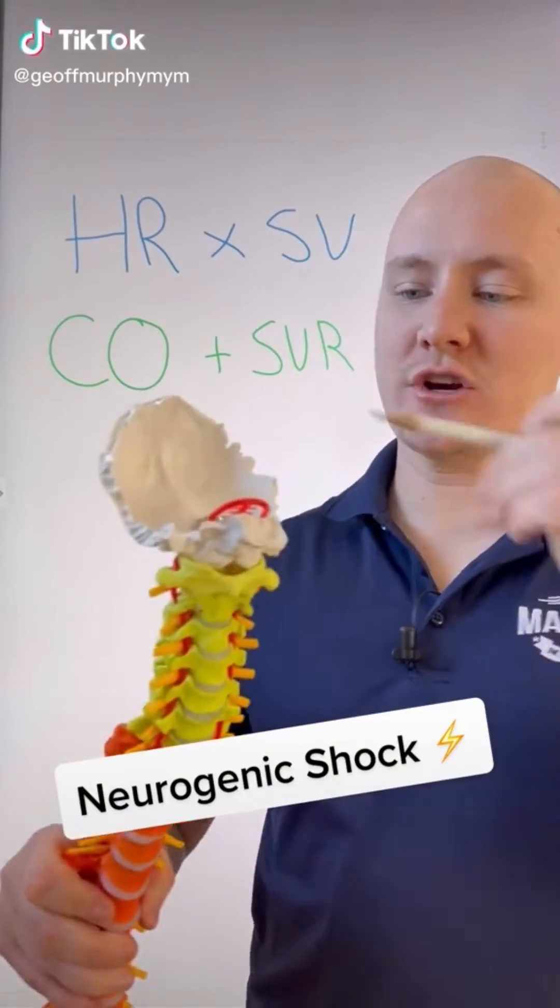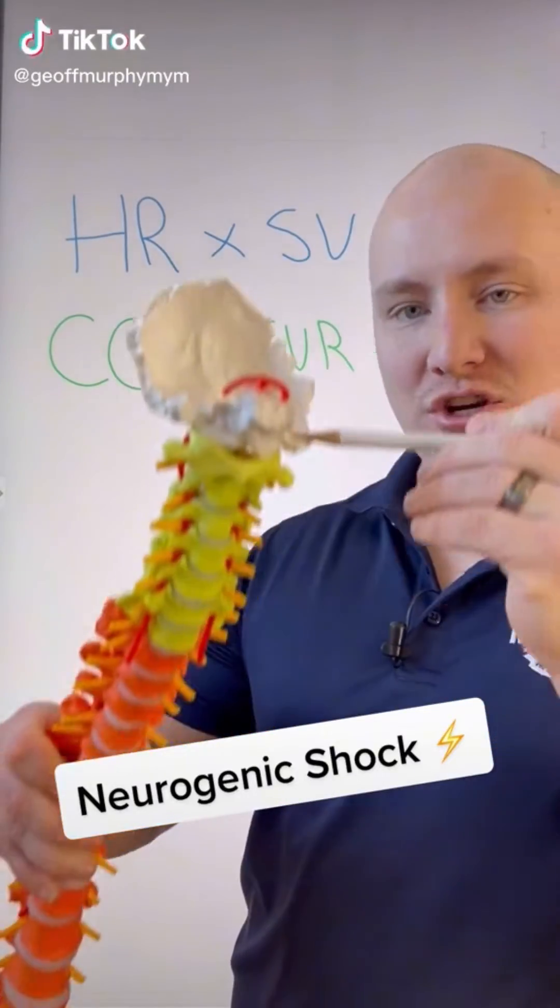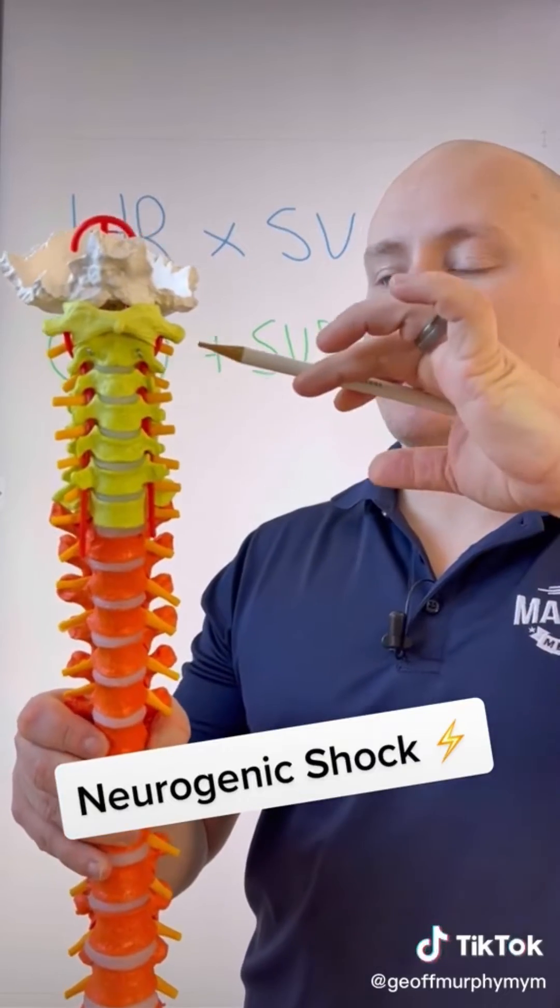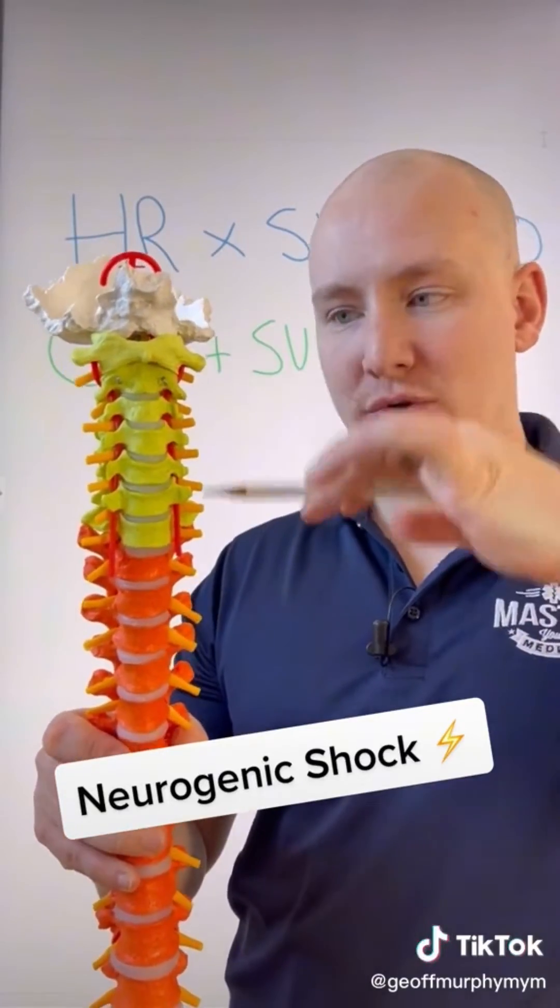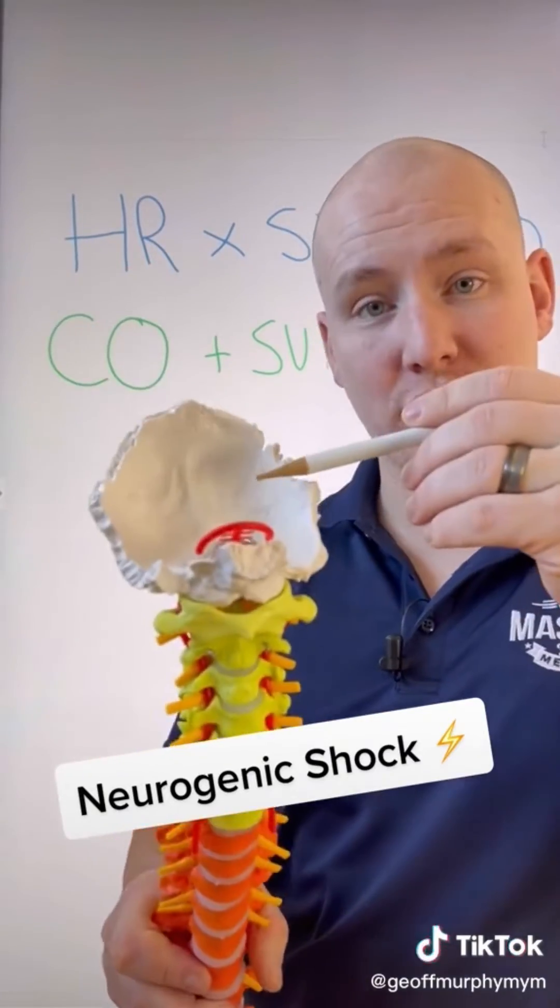Let's talk a little bit about neurogenic shock. Neurogenic shock is all about the damage of the cervical spine and the inability to send transmissions through the cervical spine from the medulla, which controls sympathetic and parasympathetic response within the body.